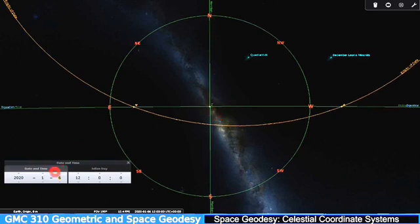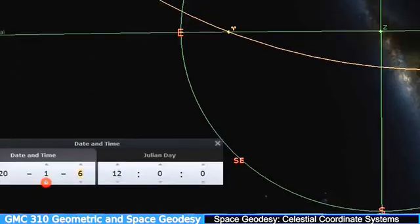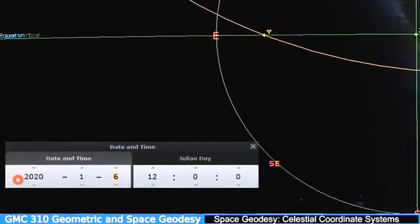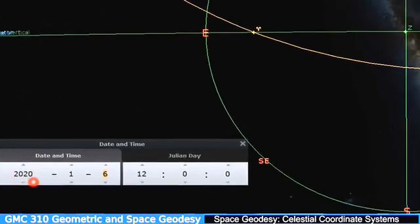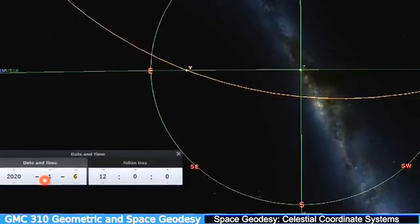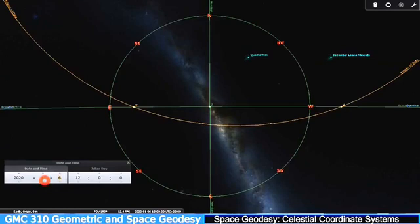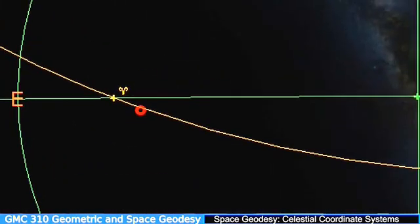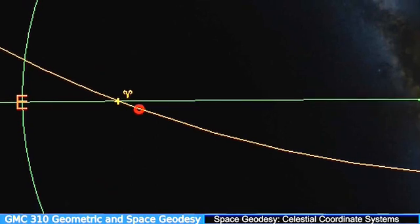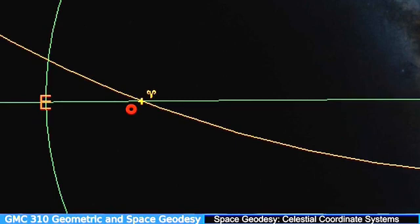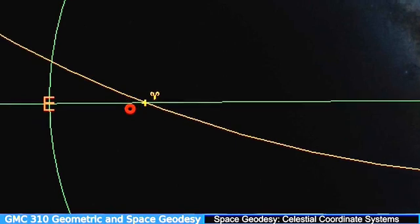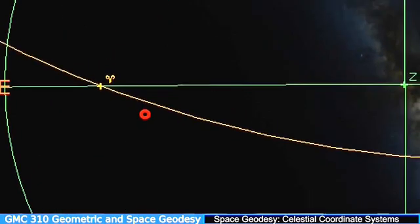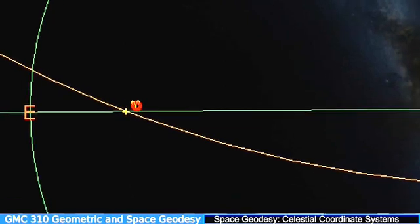Good, and I'm looking at a date of 6 January 2020, and what we're going to do is we're going to move on with the dates and see what happens to that which is the first point of Aries, which is that point which I showed you earlier on where the sun crosses from south to north across the equator, and you'll see that point stays on the equator all the time.